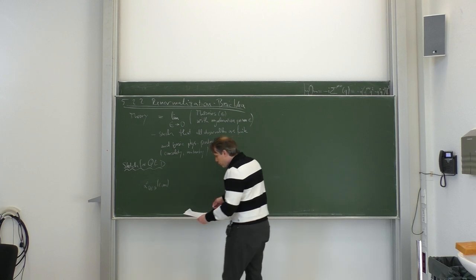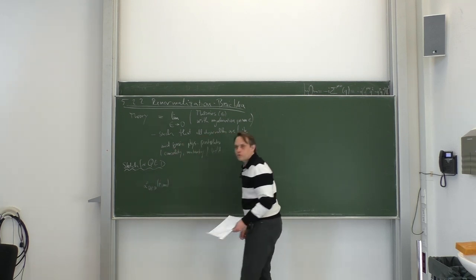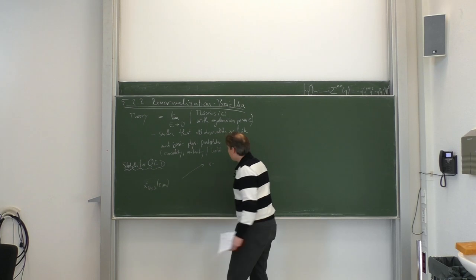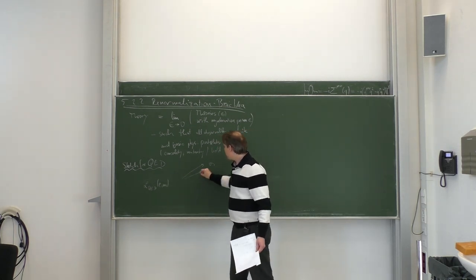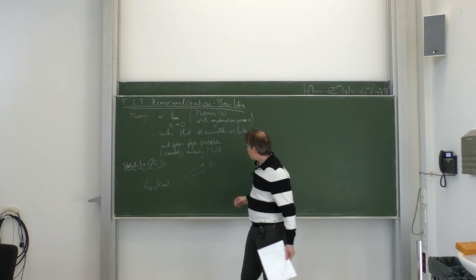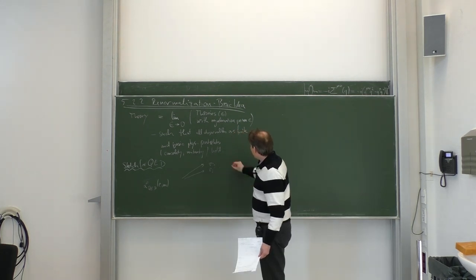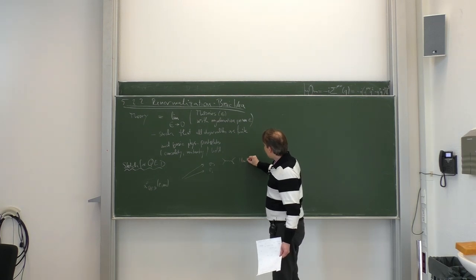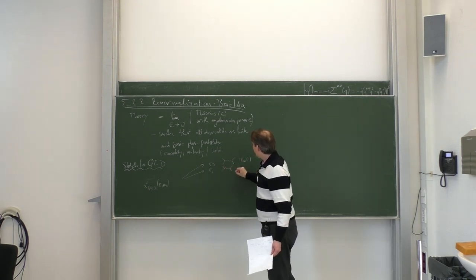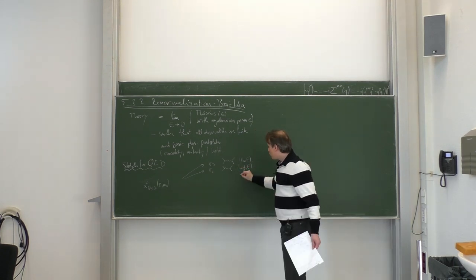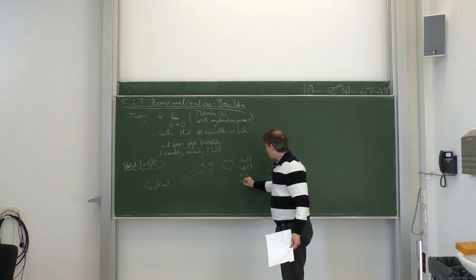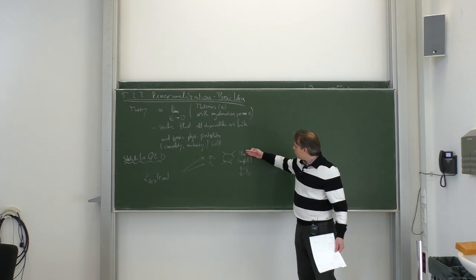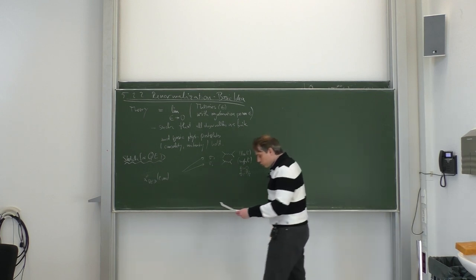In QED we start our calculations from the Lagrangian. All Feynman rules and Feynman diagrams come from the Lagrangian, and therefore each formula we write down in QED comes from the QED Lagrangian, which contains two parameters, e and m. Everything that you calculate will be a function of those two input parameters, e and m. You can calculate observables: sigma 1, sigma 2, for example e+e- to mu+mu- at low energies, at high energies, at different angles. Also g minus 2 of the muon or the hydrogen spectrum — all of those quantities are observables.